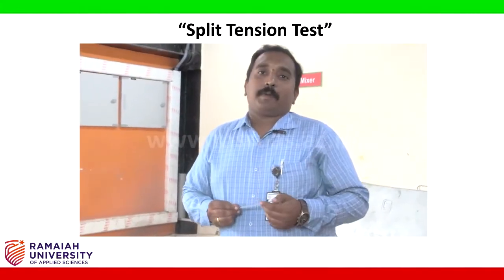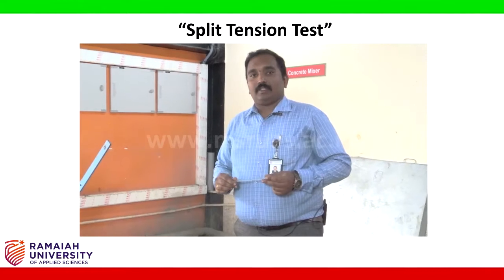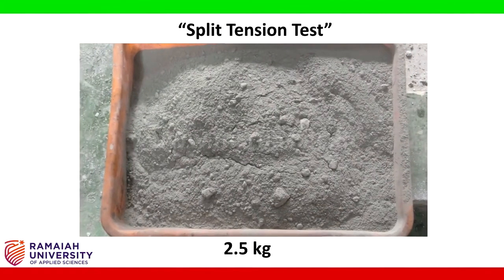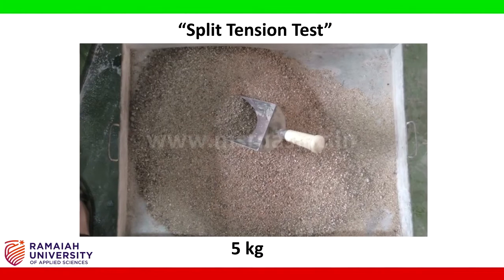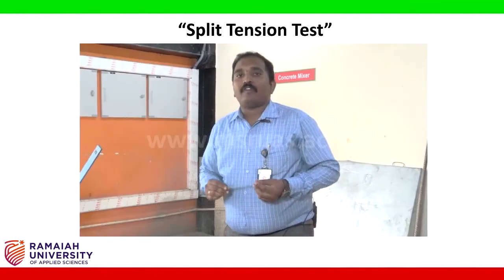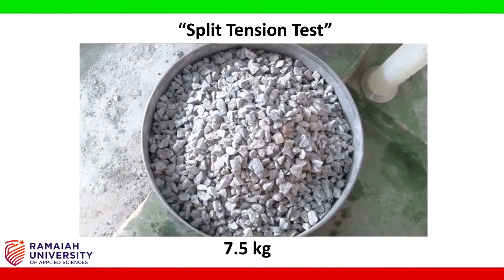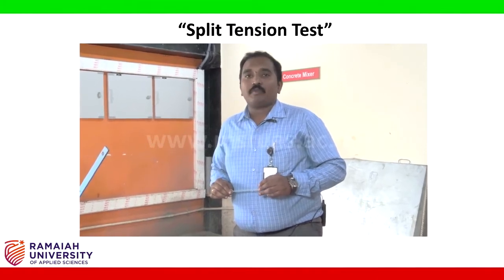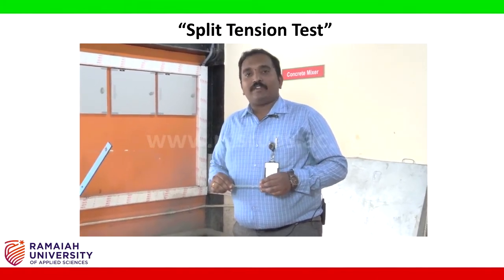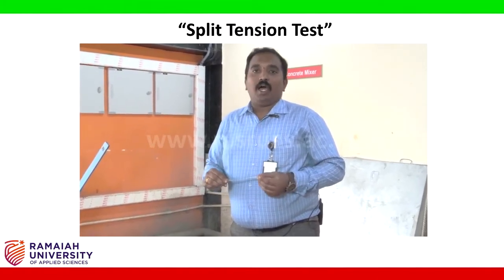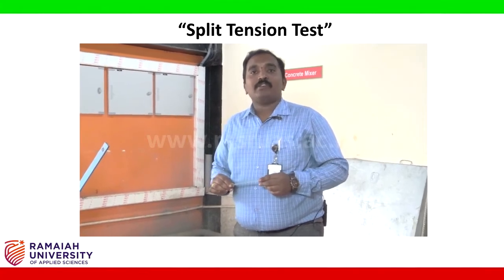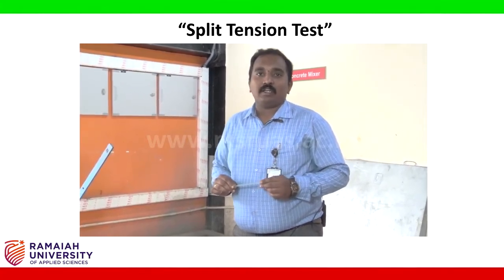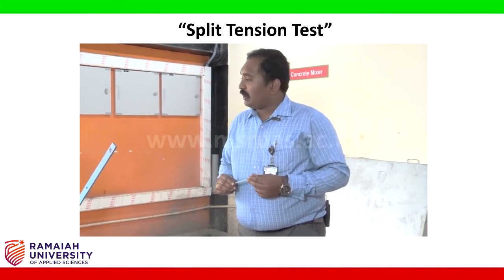For preparation of mix, we have taken 2.5 kg of cement, 5 kg of fine aggregate, and 7.5 kg of coarse aggregate, giving a ratio of 1:2:3. We generally do this for M20 grade concrete. For the first trial, I am considering the water-cement ratio as 0.4.